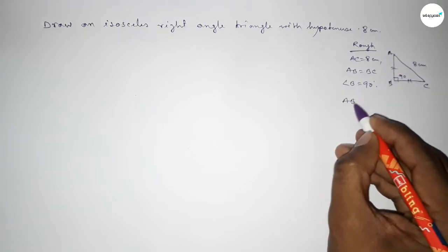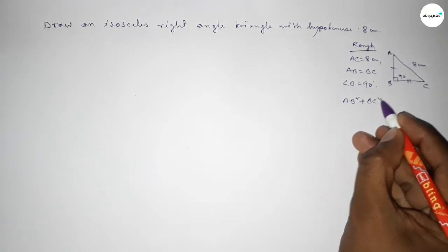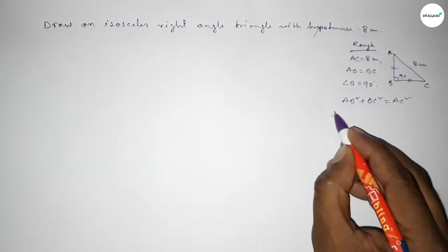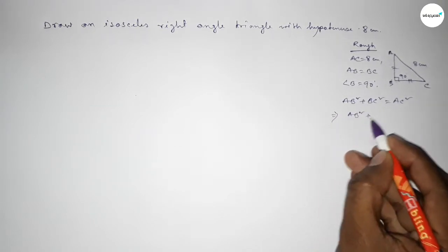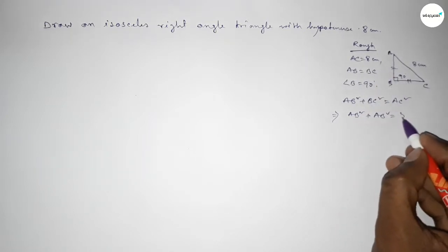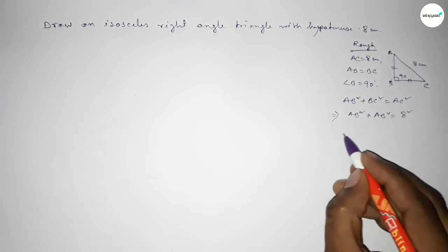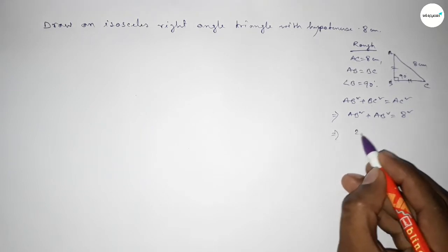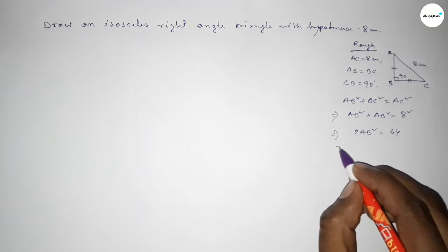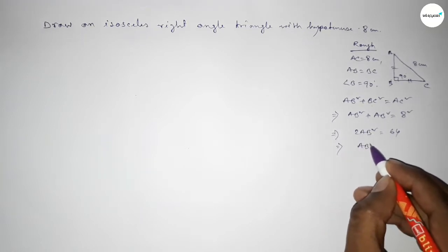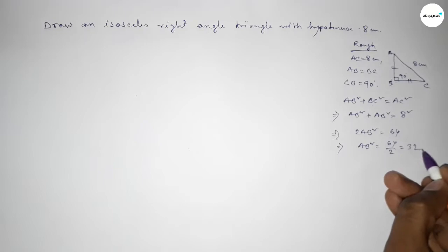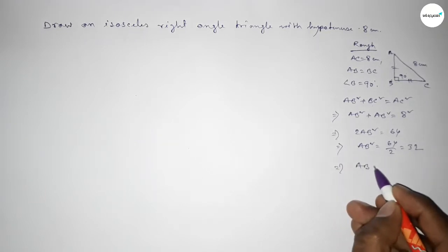So AB squared plus BC squared equals AC squared. Since AB equals BC, this gives AB squared plus AB squared equals 8 squared, which implies 2AB squared equals 64, so AB squared equals 64 over 2, which equals 32.